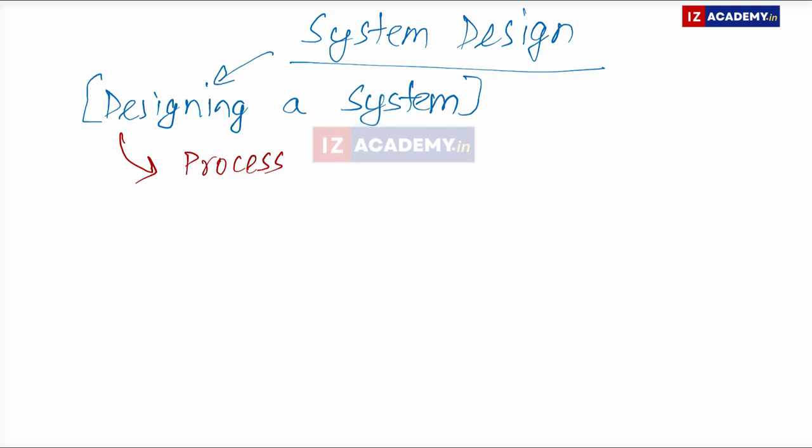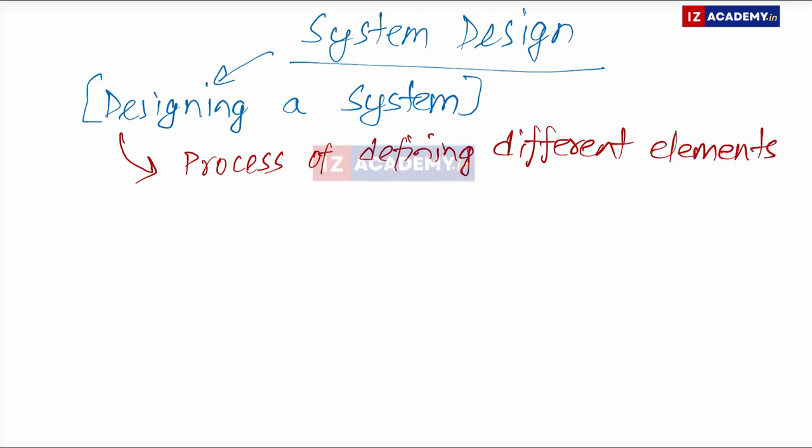So what exactly do we understand when we say that we design a system? It means that there is a process - defined steps - a process of defining different elements. Design means process of defining different elements of the system.